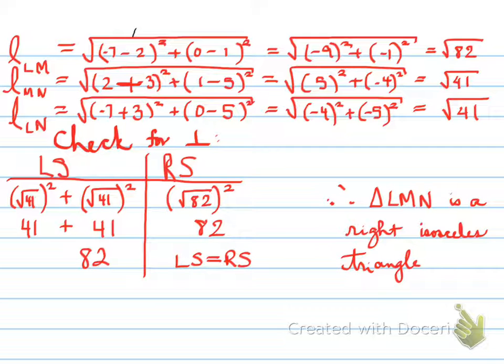Because the Pythagorean theorem is true here, we can say it is a right isosceles triangle.